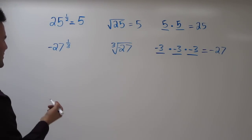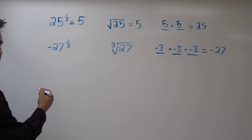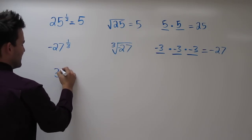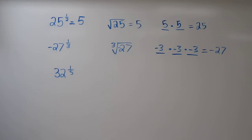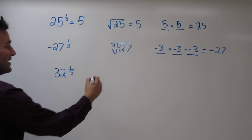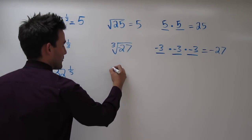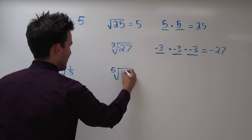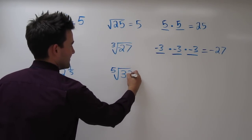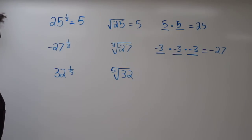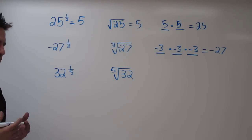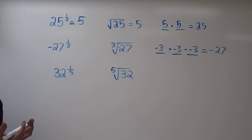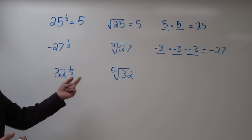Let's try another one. How about 32 to the 1 fifth power? What we have to take is actually the 5th root of 32. And to answer this, we have to ask: what raised to the 5th power would equal 32?